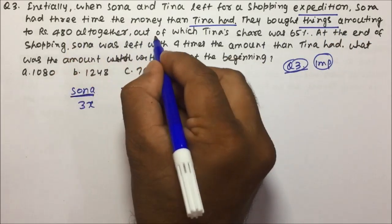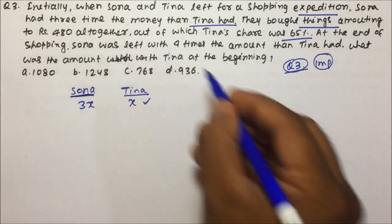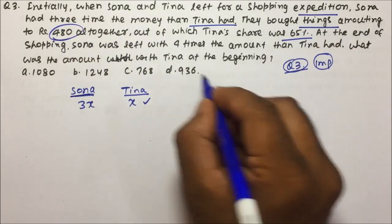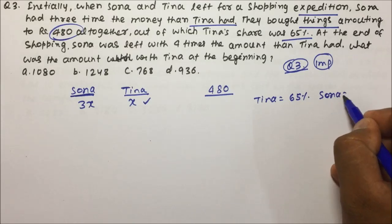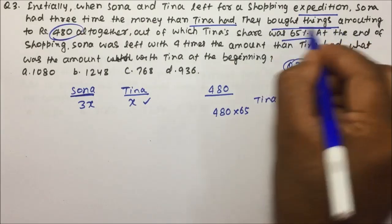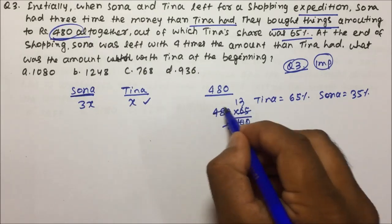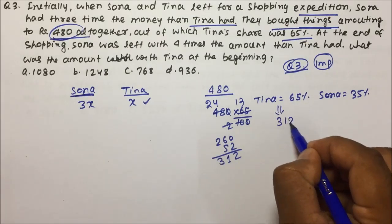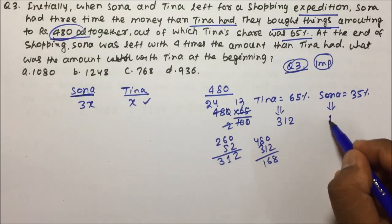They bought things amounting to rupees 480 together, out of which Tina's share was 65 percent. So Sona's share is 35 percent. Calculating 65% of 480: (65/100)×480 = 312. So Tina spent 312 rupees. Sona's share = 480−312 = 168 rupees.